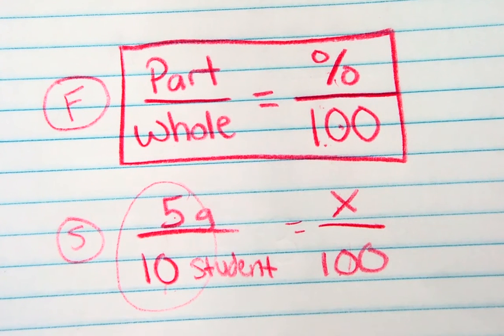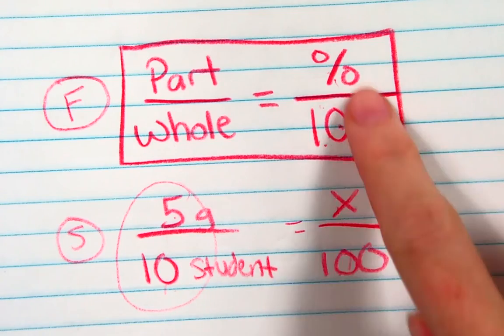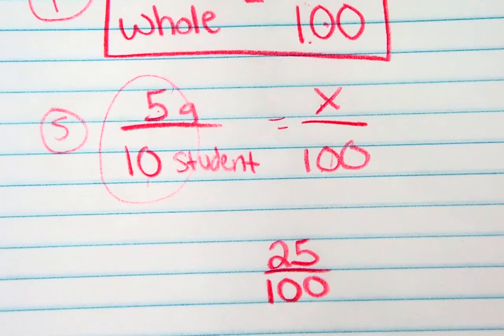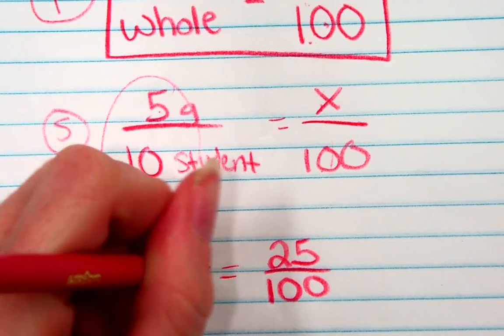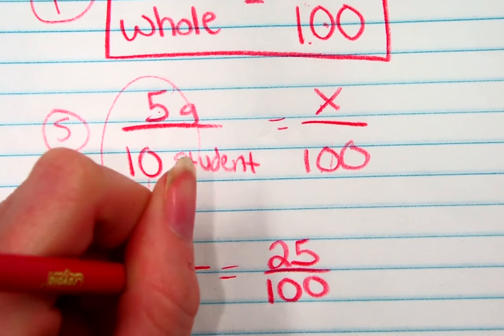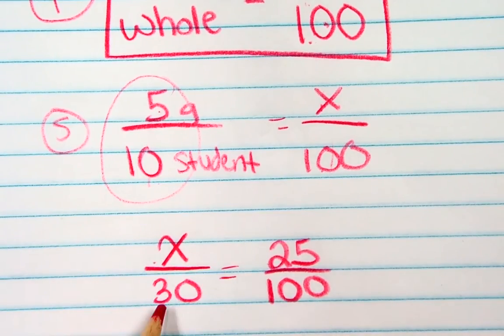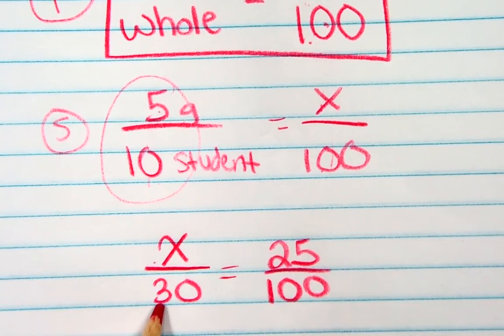Another example could be, and if you watch the graphing video on circle graphs, you'll see this used a lot, let's say that I know 25% of my class has an A. So, let's say that 25% of Ms. McKinney's math class has an A in her class right now. And if I have a total of 30 students in that class, how many have an A? So, I don't know how many have an A, but I know the whole is 30. That's the total. And I know 25%. So, again, you do the same thing and solve it. Pretty straightforward.